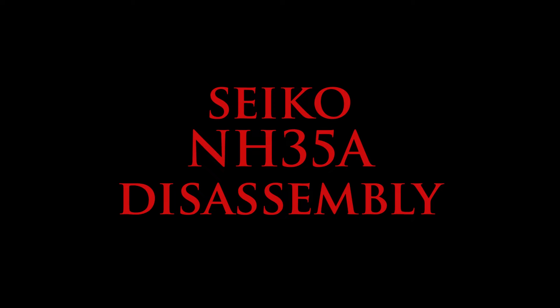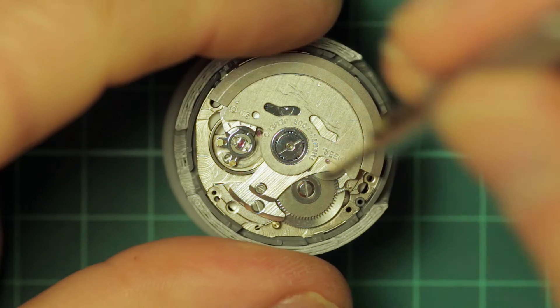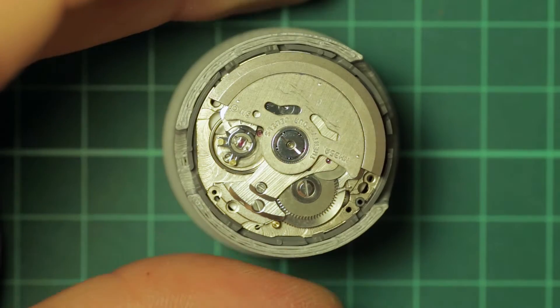Hi and welcome. In this video we're going to be disassembling a Seiko NH35A, very similar to the 7S26 that it replaced but with the added features of hacking and hand winding.